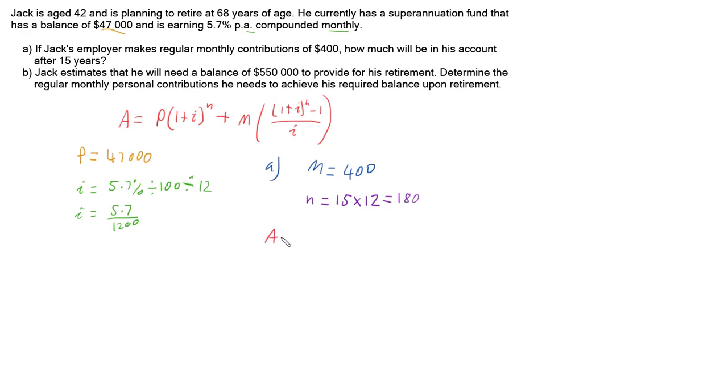So now if we go to our formula, A equals P, which is $47,000 multiplied by (1 plus i), which is 5.7 over 1200, to the power of n, which is 180, plus our repayment 400, multiplied by the fraction (1 plus i) again, 5.7 over 1200, to the power of n, which is 180, minus 1 over i again, 5.7 over 1200.